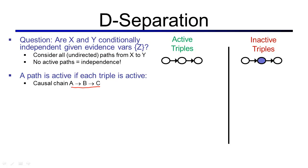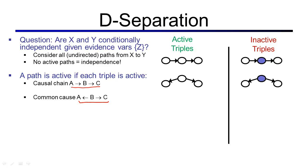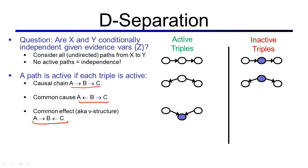The second type of triple is the common cause, where B points to A and to C. If B is unobserved, we have an active triple; if B is observed, we have an inactive triple. The third case is a common effect, or V-structure, where the middle node B is pointed to by both A and C. Here, when B is observed, or when any of the descendants of B are observed, we have an active triple. If B is not observed and none of its descendants are observed, we have an inactive triple.